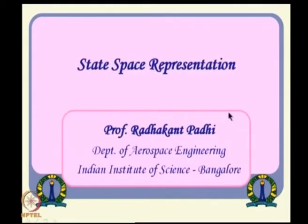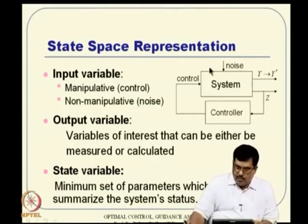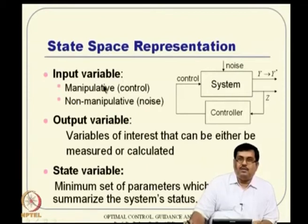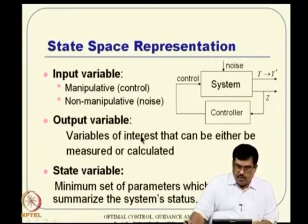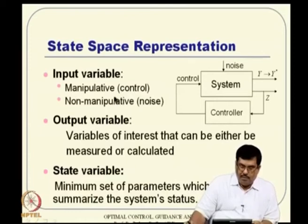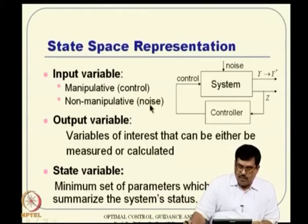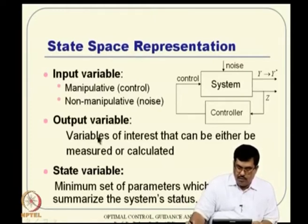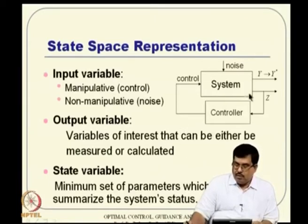I start with state space representation, very basic ideas. When you talk about any system, I mean dynamical systems, we typically talk about three types of variables. One is input variable, the other one is output variable, and the third one is state variable, which I also discussed in the first lecture. The input variable can be classified into two classes: one is manipulative, which is the control variable, or it can be non-manipulative, which is noise. Both are inputs to the system. Considering output variable, that can be defined as either the variables of interest or some measured or calculated variable.